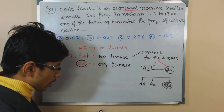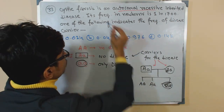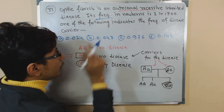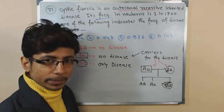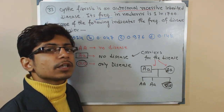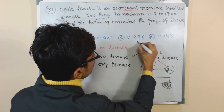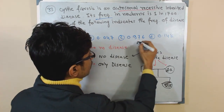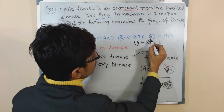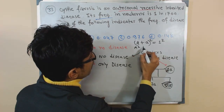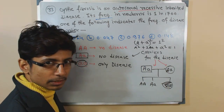The frequency of the disease is 1 in 1700. According to Hardy-Weinberg equilibrium, the frequencies of dominant and recessive alleles add up to one: capital A plus small a equals 1. This can be expanded as: capital A squared plus 2 times capital A times small a plus small a squared equals 1, using the simple algebraic expansion formula.